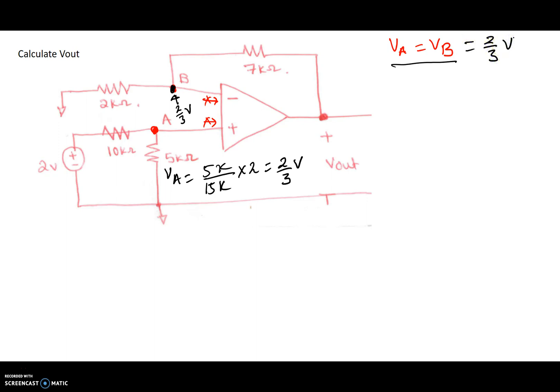Now let's draw the direction of current flowing and arbitrarily assign that as I1 and we'll call this I2. If I do Kirchhoff's current law at node B, I get I1 current equals I2.